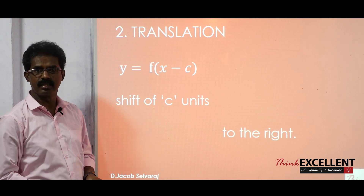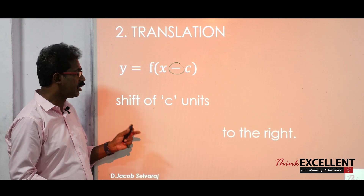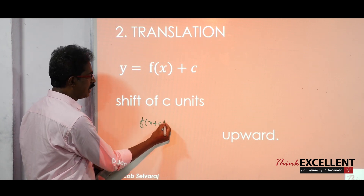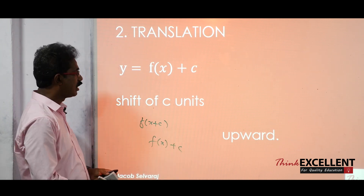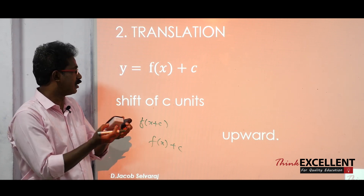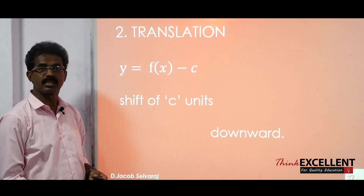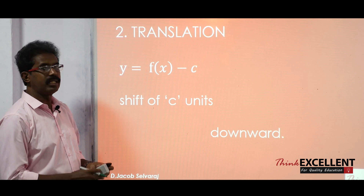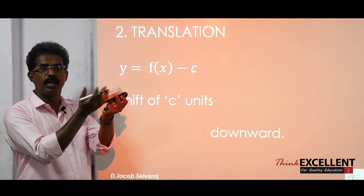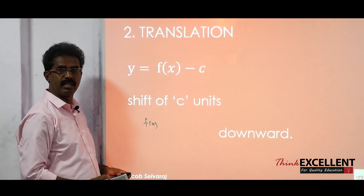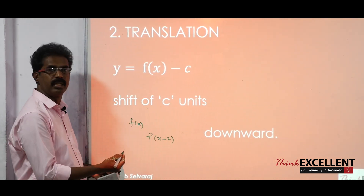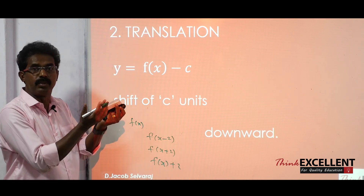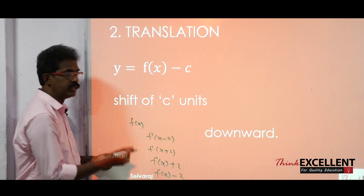Then f(x) + c means c units upward — plus means upward. And f(x) − c means c units downward. To summarize: f(x − 2) means 2 units to the right; f(x + 2) means 2 units to the left; f(x) + 2 means 2 units above; and f(x) − 2 means 2 units downward.